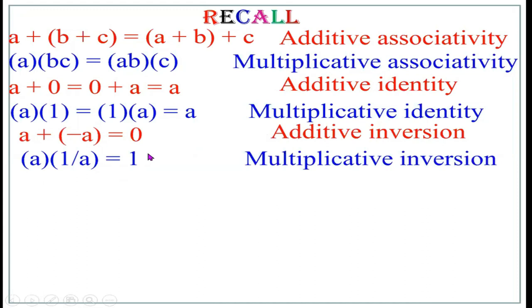Therefore, if you want to find the additive inverse or multiplicative inverse of any element, we must first know the identity. So after finding the identity, we will go for the inverse.